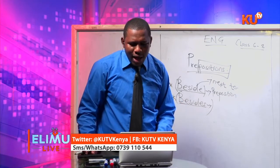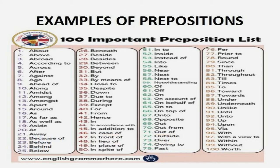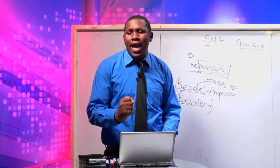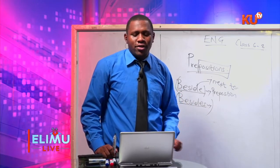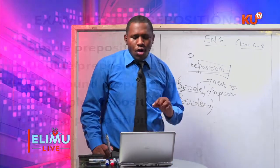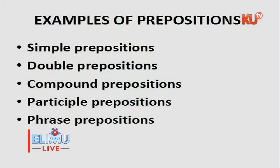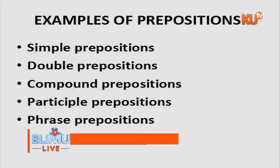Other preposition examples: in front of, in lieu of, in place of, in spite of — three words each; despite — one word; next to, of, on account of, on behalf of. There are very many examples of prepositions. Prepositions are grouped into five distinct groups: simple prepositions, double prepositions, compound prepositions, participio prepositions, and phrase prepositions.